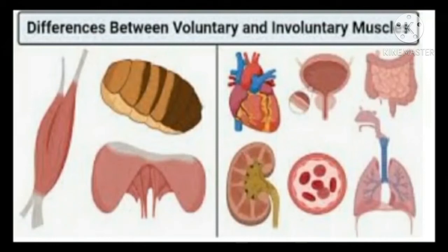There are mainly two types of muscles: voluntary muscles and involuntary muscles. Voluntary muscles are the muscles which function on our will. Examples: muscles in our arms and legs are voluntary muscles. Actions such as walking and eating depend upon our will.